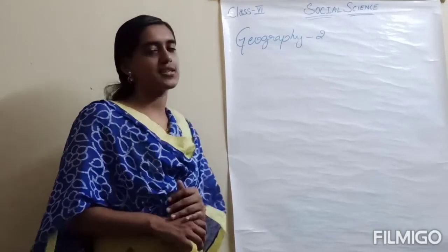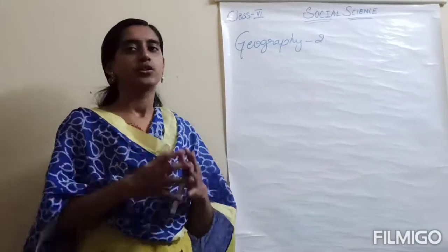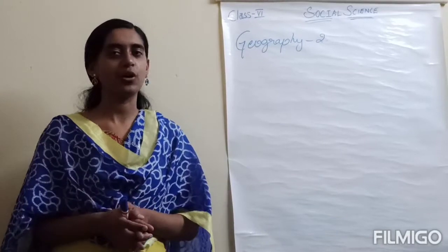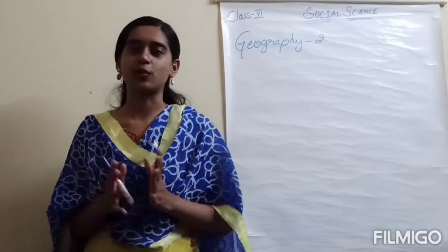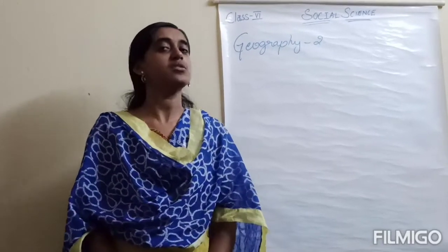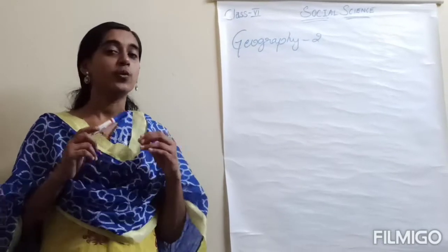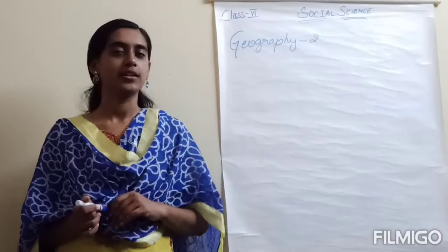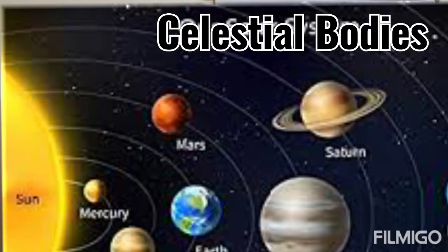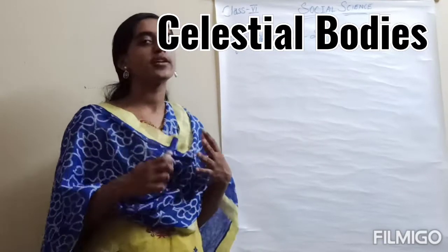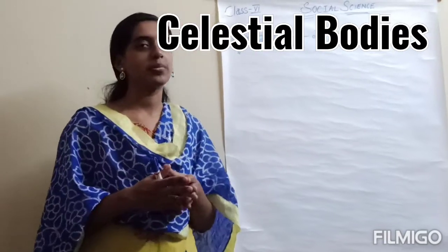Before we start discussing geography lesson 2, let's have a short recap. I want to test how much you remember about geography lesson 1. What was the name of geography lesson number 1? It was 'The Earth in the Solar System.' You have learnt about celestial bodies — all the objects placed in space are called celestial bodies. That includes our sun, planets, asteroids, meteors, and so on.